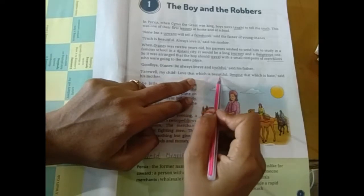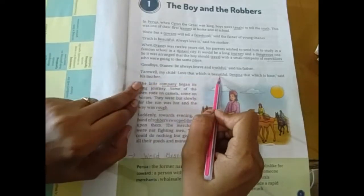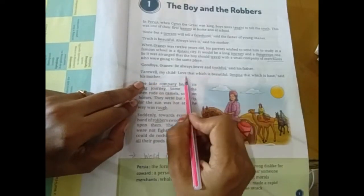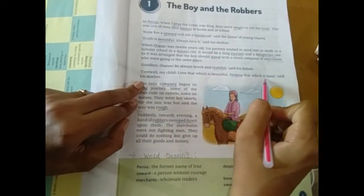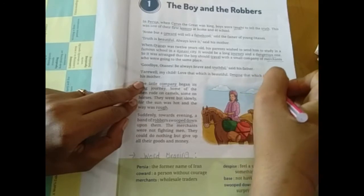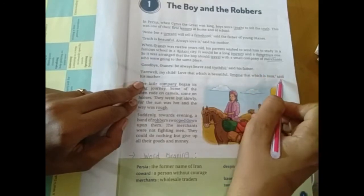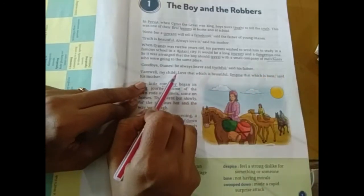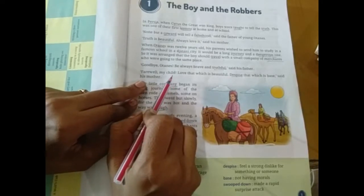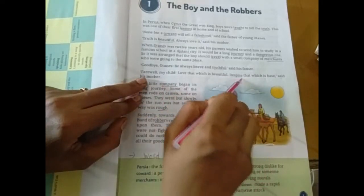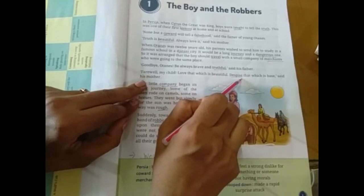Farewell. Jaate samay uski mummy ne kya kaha? Love that which is beautiful. Despite that which is base, said his mother. Feel a strong dislike for something or someone. Kuch andar aapke andar achha hota hai. Strongness samay sandar se honi chahiye.